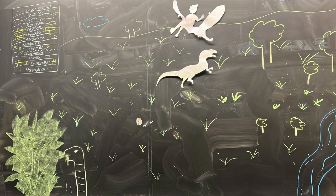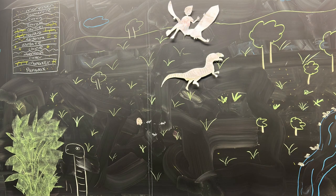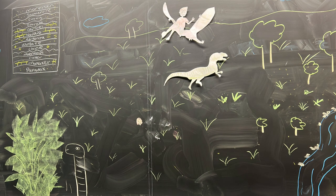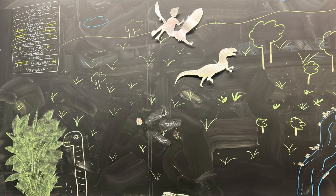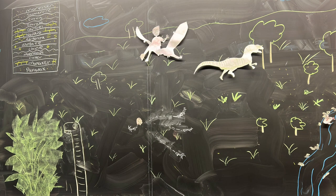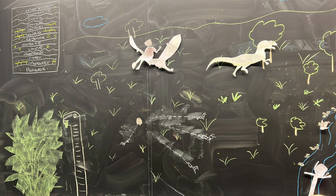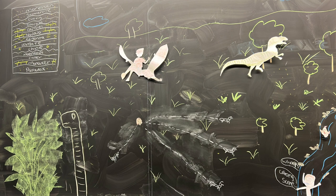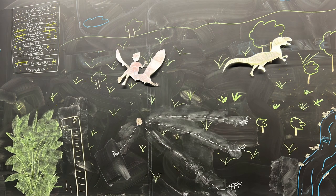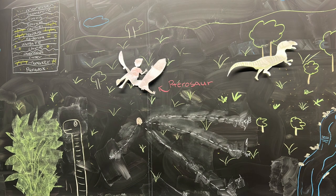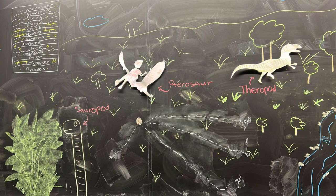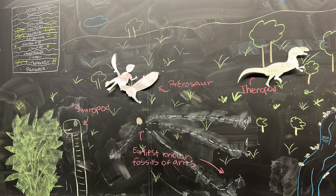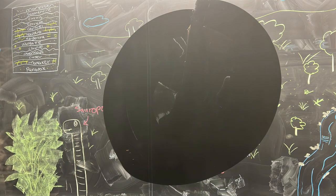Moving forward to the upper Jurassic period, the Somerville and Morrison Formations show a major reversal in environment back to the diverse flora and fauna we saw earlier. During this time period we can see pterosaurs, sauropods, theropods, and the earliest known fossils of ants.